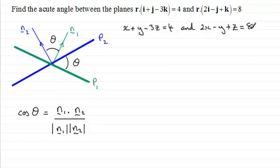So either way, to do questions like this, what I would do is say, let my normal vectors, let's say, n1 be i plus j minus 3k.